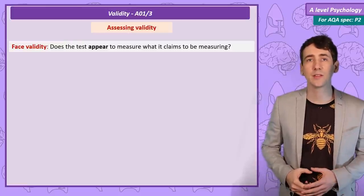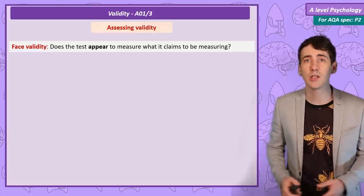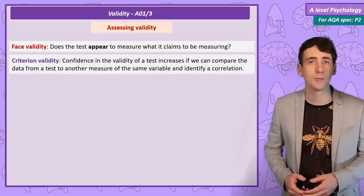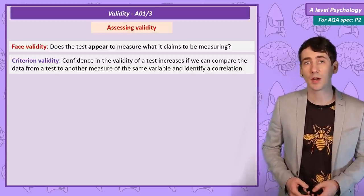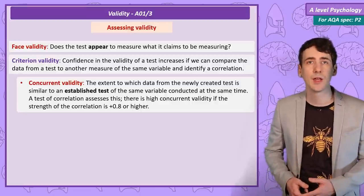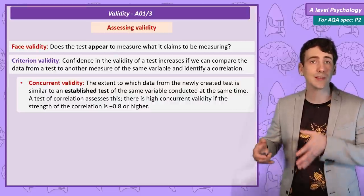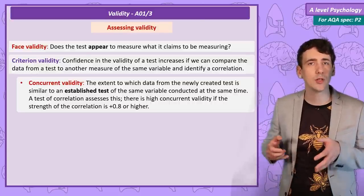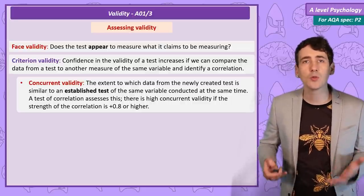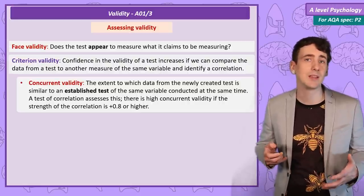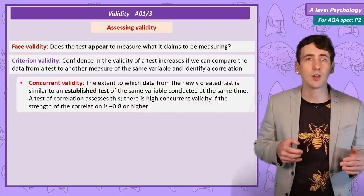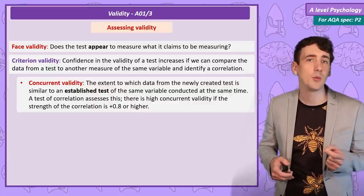We can have confidence in the validity of a test if we can compare the data from the test to another measurement and find a correlation — we call this criterion validity, matching scores against another standard. There are two types: concurrent and predictive. Concurrent validity uses an older established test. For example, if we have developed a new IQ test, we would want someone who scores highly on the new test to have a similar score on the old test. There is high concurrent validity when there is close agreement between the two, typically indicated by a correlation of 0.8 or higher.